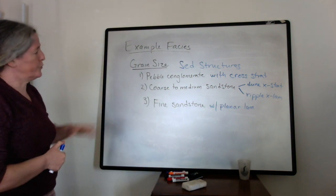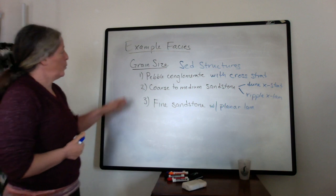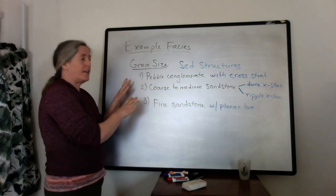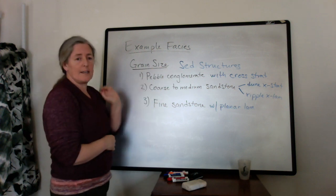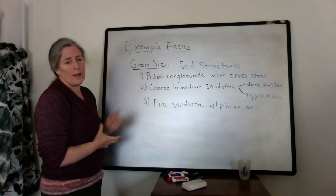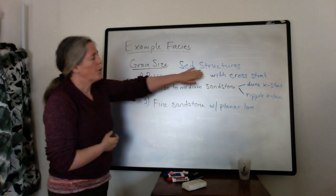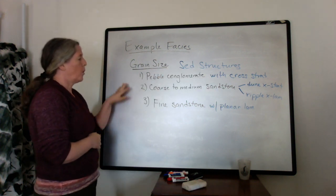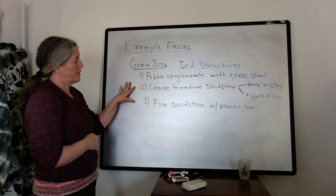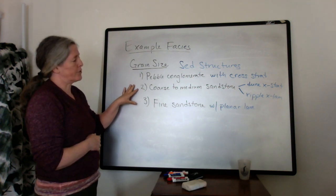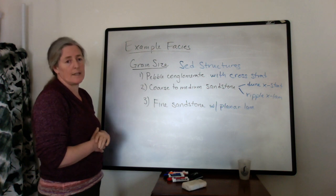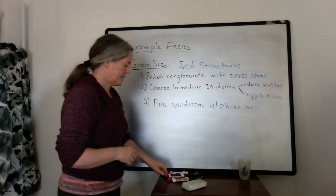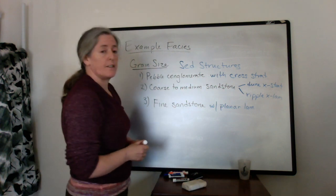We've done two different things with the facies and you could use, often it's really nice if you could use both the grain size and the sedimentary structures. But if you have a uniform grain size, you might just use the sedimentary structures. Or if the sedimentary structures are mostly dune and ripple, maybe the grain size is more important. And you would make that choice based on your scientific questions.